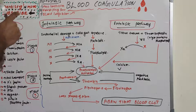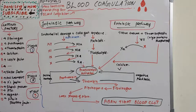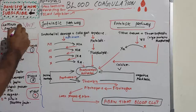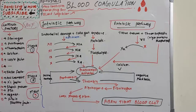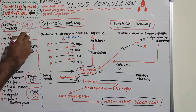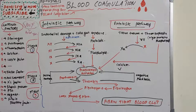These activated platelets secrete serotonin and other vasoconstrictor substances which cause constriction of the blood vessel. The attachment of platelets to collagen is accelerated by von Willebrand factor. This factor acts as a bridge between a specific glycoprotein present on the surface of the platelet and collagen fibrils.